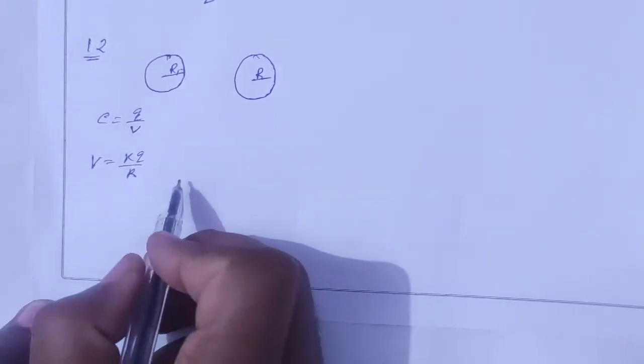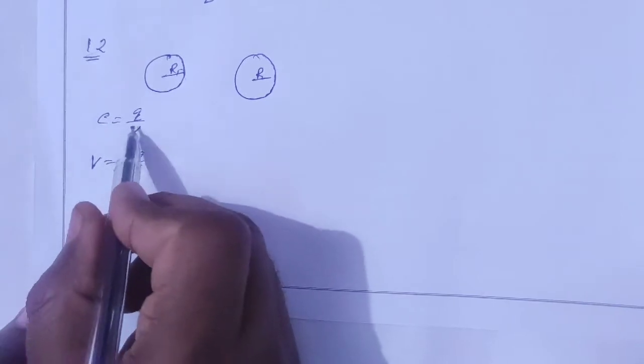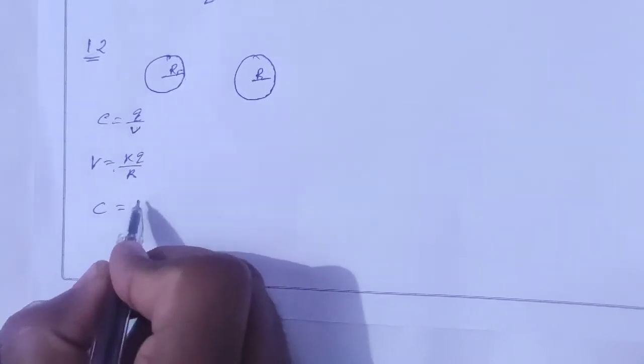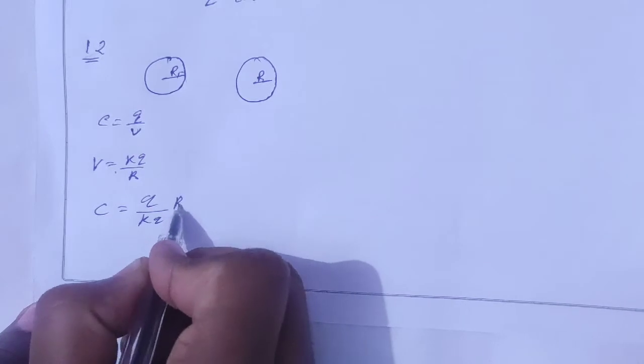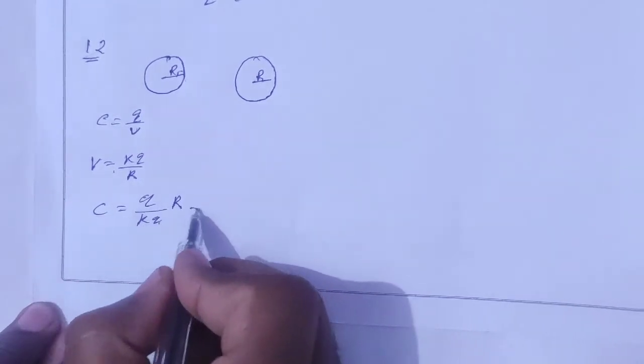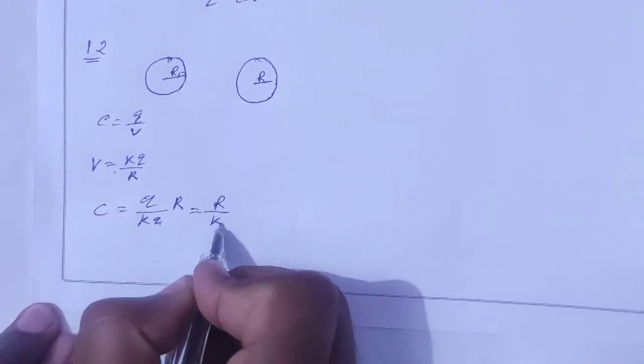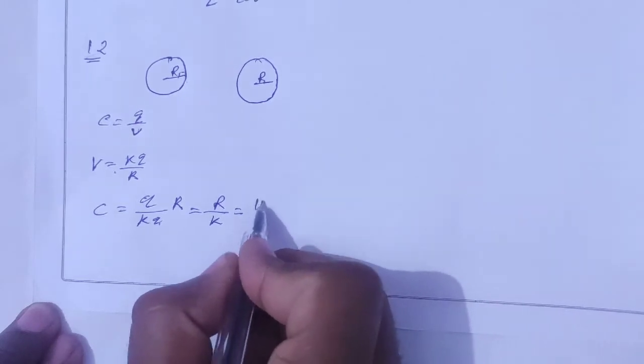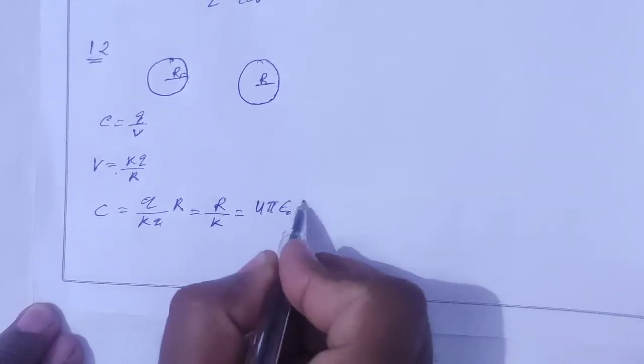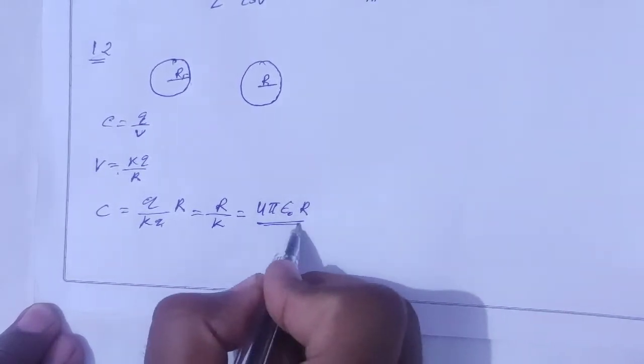Putting this value of V here, C equals Q divided by kQ by R. Q cancels out, so we get C equals R by k, which equals 4π epsilon zero R. So the capacitance is 4π epsilon zero R.